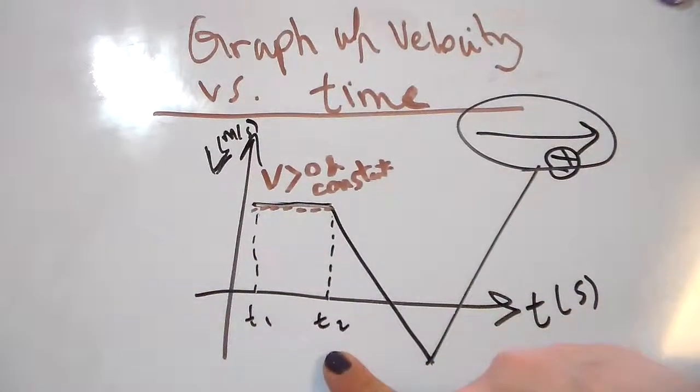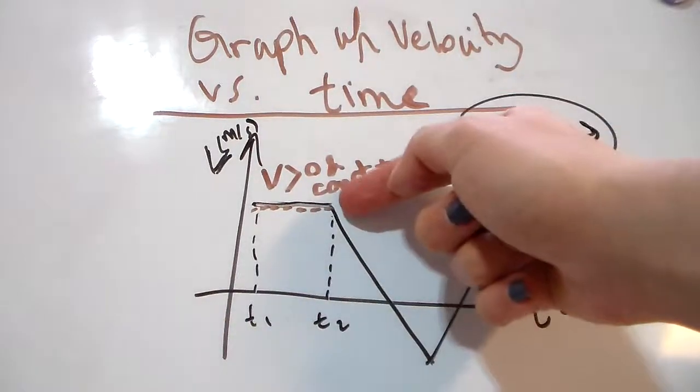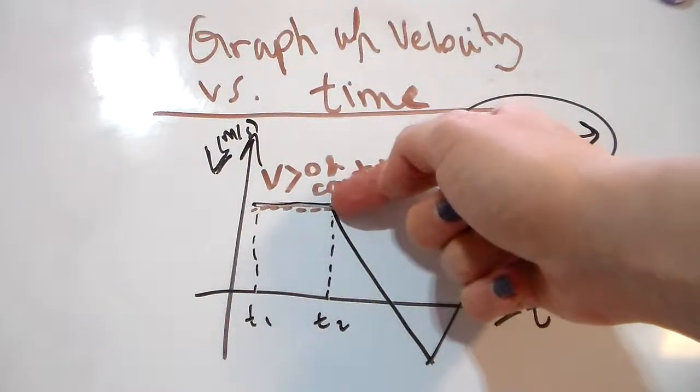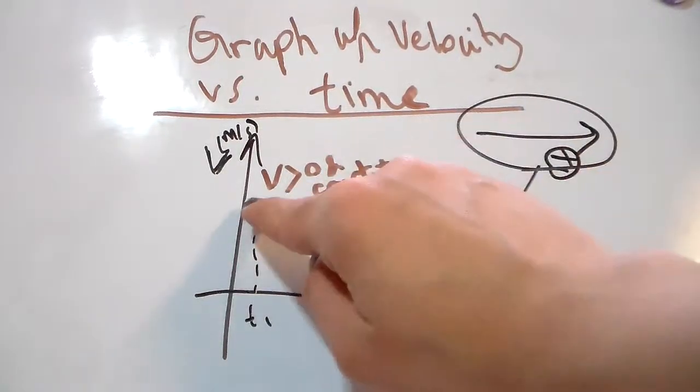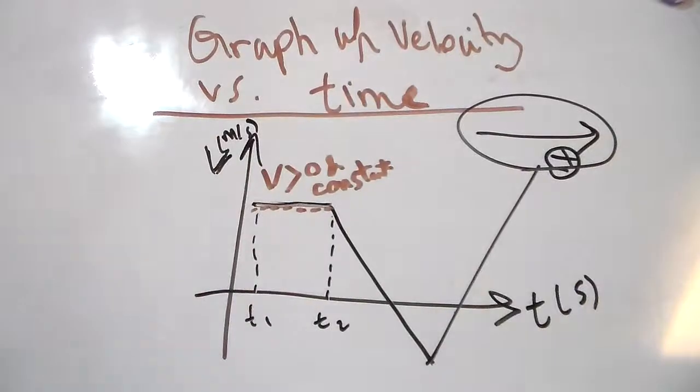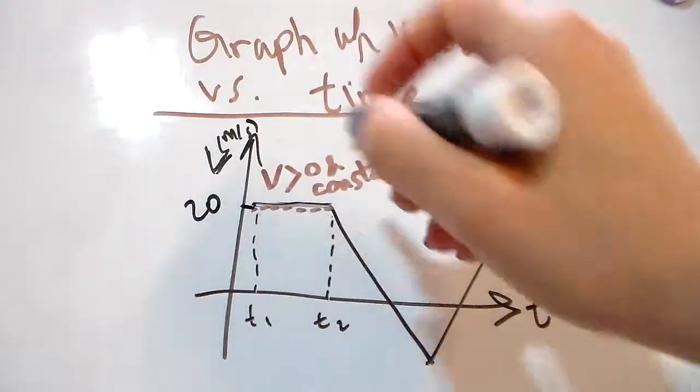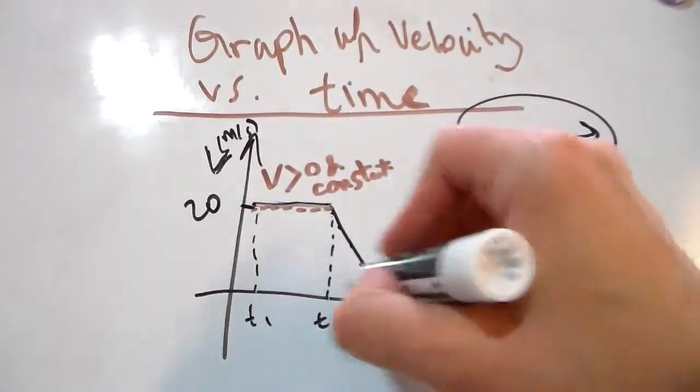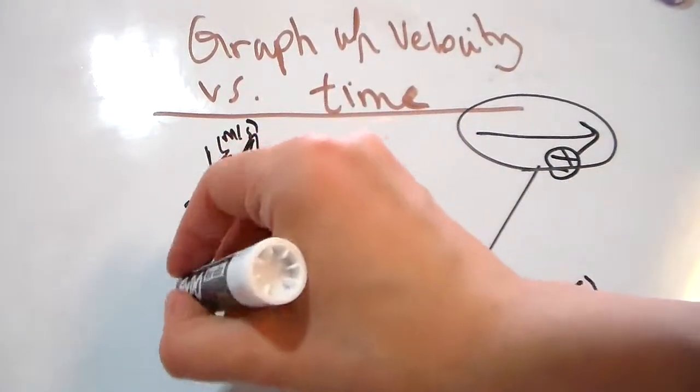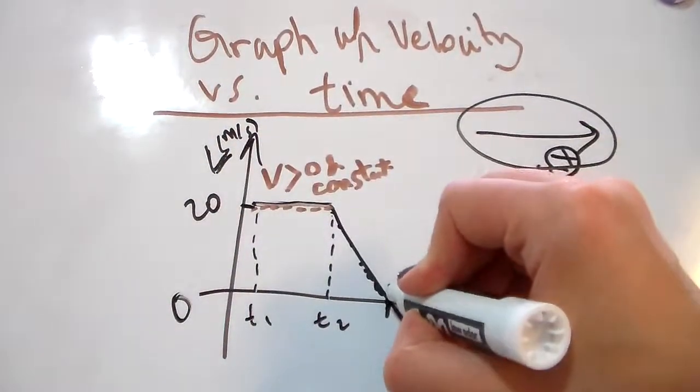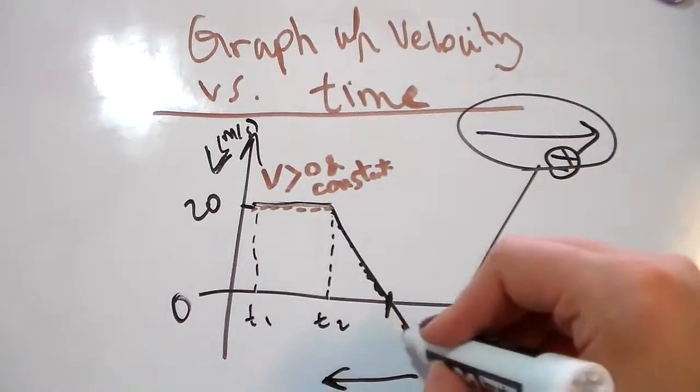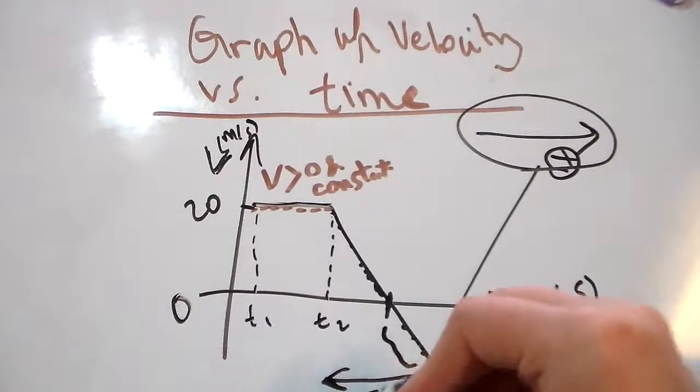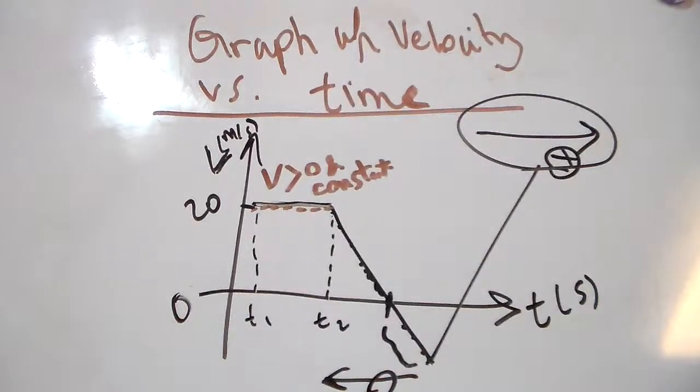At t2, let's say at five seconds, the velocity started to go down. So as you see, this was 20 meters per second, and it's now decreasing to reach zero, which means it stops momentarily. Then it goes towards negative direction, which means the car is now moving towards the left.